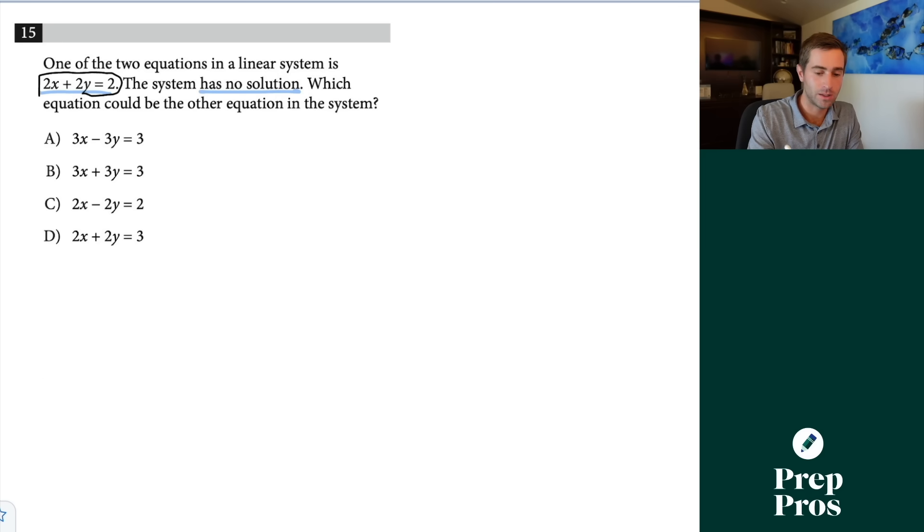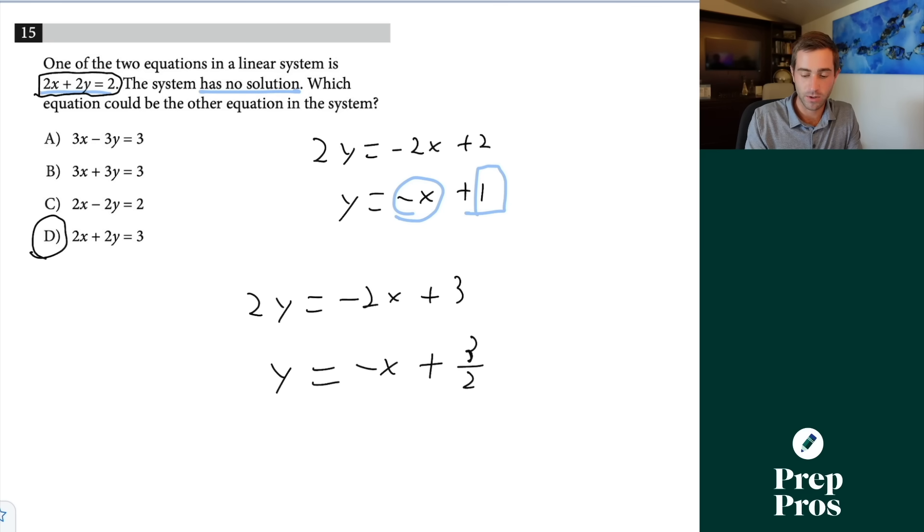Our super safe way of going through this without shortcutting it is putting this in y equals mx plus b form. So I would subtract over my 2x, then I divide everything by 2, and this gives me y equals negative x plus 1. So what I simply know is I need to have the same slope and a different y intercept as I'm going through each of these answer choices. This is how I can spot that D is correct, because when I subtract over that 2x and divide by 2, we're left with 2y equals negative 2x plus 3. We divide both sides by 2. We're left with y equals negative x. There's our same slope, but now we have plus 3 halves. So we have a same slope, different y intercept. That's how we can see that D is correct.